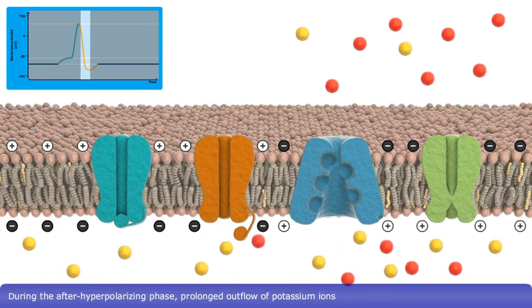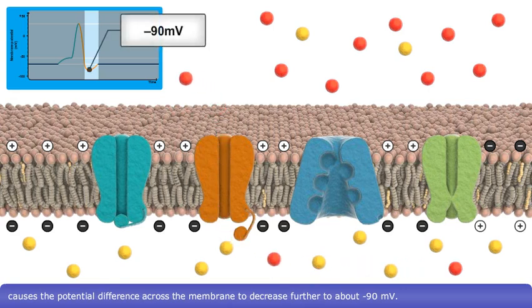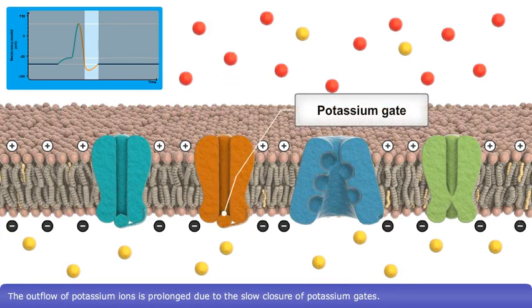During the after-hyperpolarizing phase, prolonged outflow of potassium ions causes the potential difference across the membrane to decrease further, to about minus 90 millivolts. The outflow of potassium ions is prolonged due to the slow closure of potassium gates.